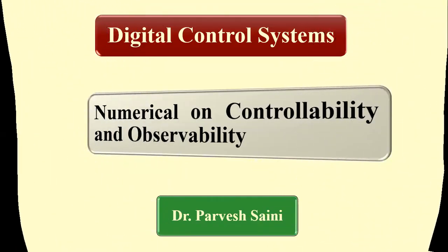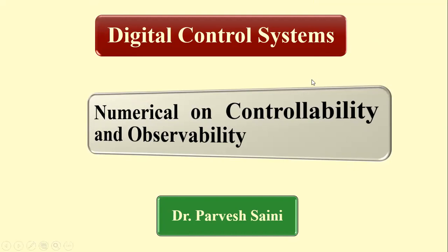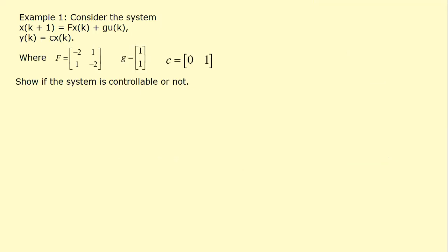In this lecture we will discuss some numericals on controllability and observability. The first example is a discrete-time system given by the state space representation with matrices F, G, and C. We have to check whether the given system is controllable or not.